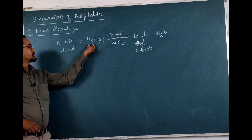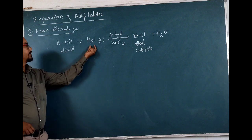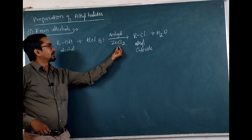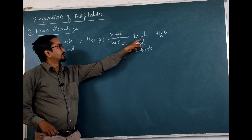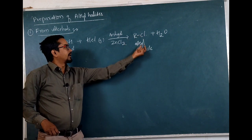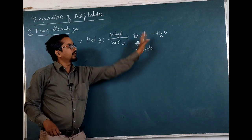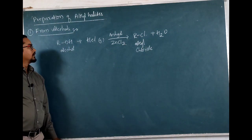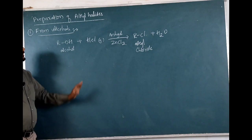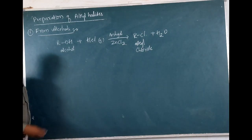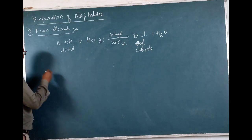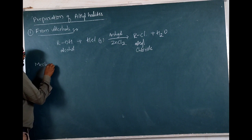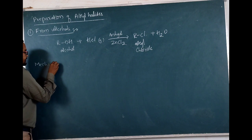Alcohols reacting with hydrogen chloride in the presence of ZnCl2 will lead to the formation of alkyl chloride with water as a byproduct. Similarly, if you look at the mechanism of this reaction.